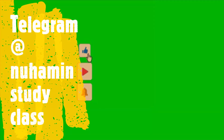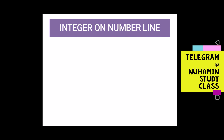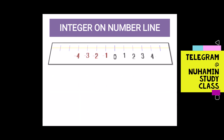The integer includes zero. The integer includes zero, and the numbers extend from zero in both directions. We will find positive numbers and negative numbers within the integers.